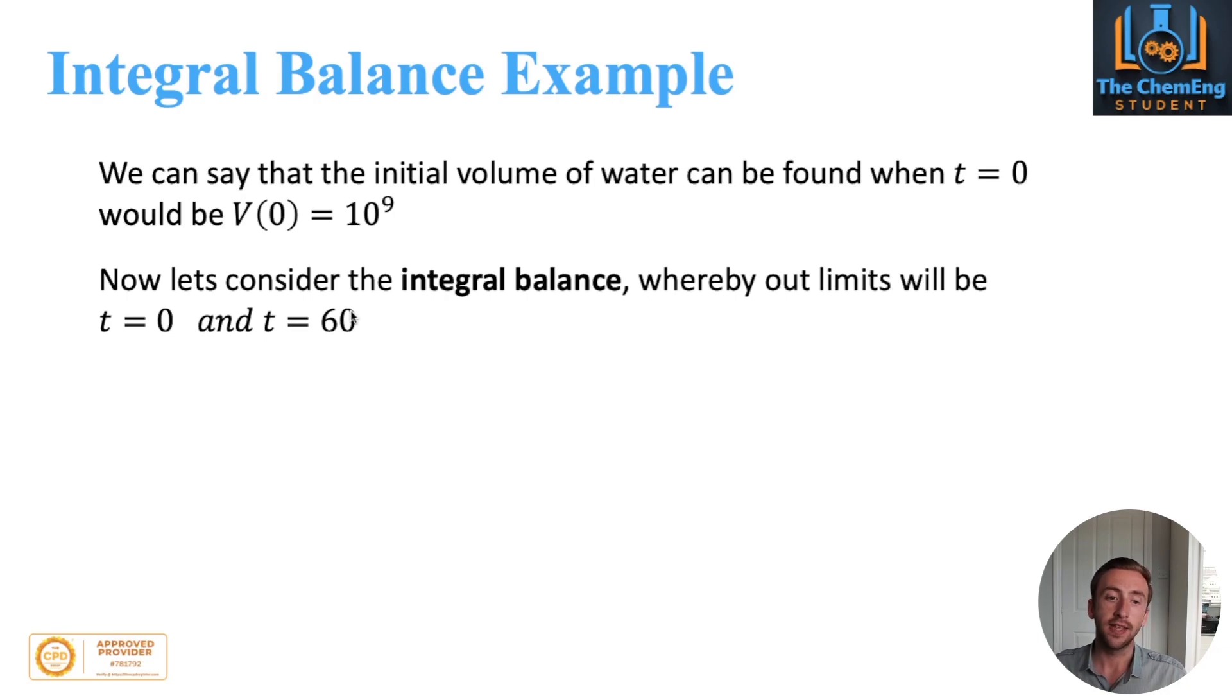Now we can consider the integral balance, whereby our limits will be from zero, because that's the time zero, and we already have information about that, and our finish time, which we want is 60 days. So that's our upper and our lower limit respectively.